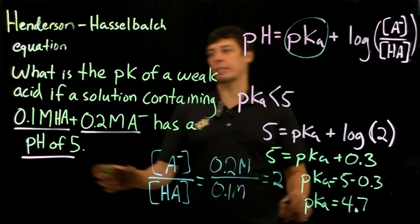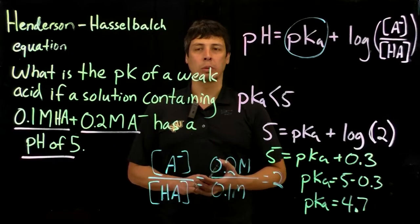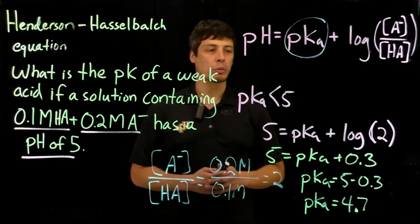So the pKa is about 4.7, the pH is 5, they're not too far away from each other, so it's well within the buffering range for this weak acid.